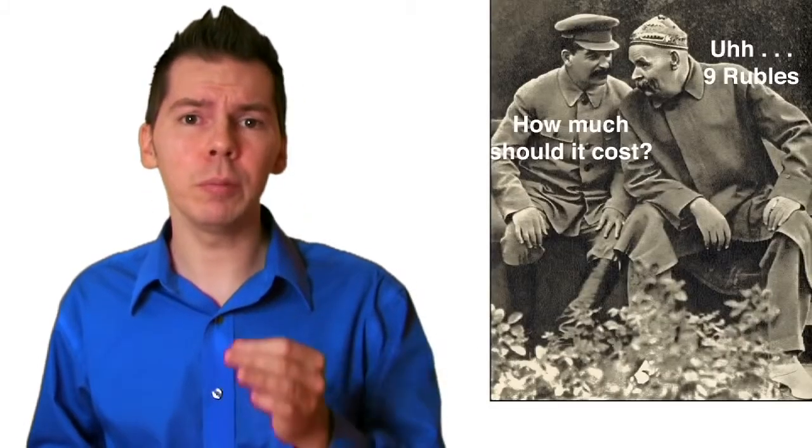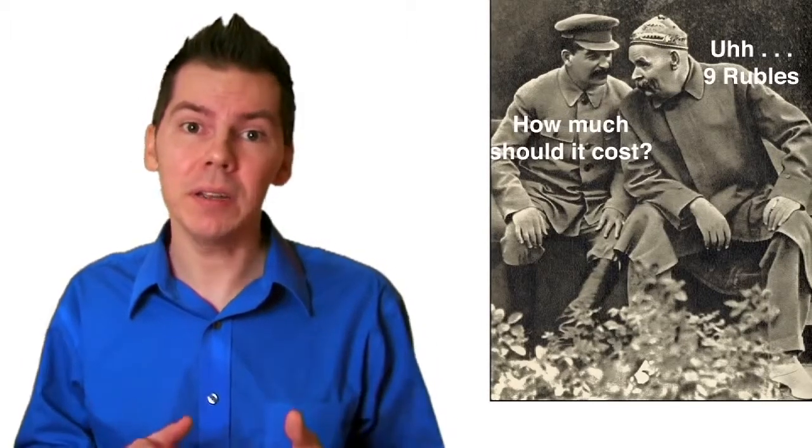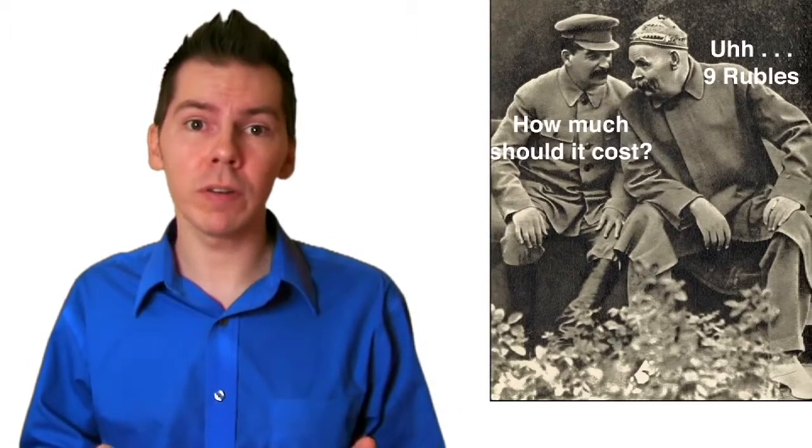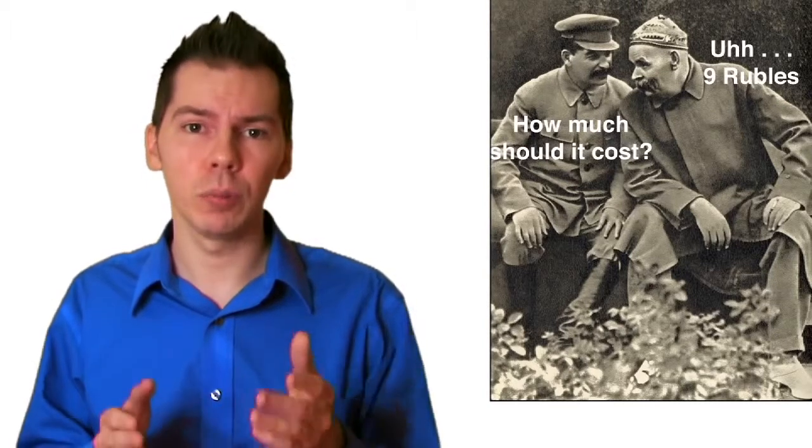The more of a monopoly the state grants itself over offering certain goods and services, the less voluntary exchange can occur within that sector. The less voluntary exchange that can occur, the more impossible it is to have any market prices, meaning that it is impossible to know how much these goods and services should cost, and it is impossible to know how many, in what quality, and in what form these goods and services should be provided, or even if they are the best allocation of the scarce resources needed to produce them. This is why private contractors love dealing with the government so much. Since the government has no way of knowing how much things should cost, the private contractors are able to charge however much they want.